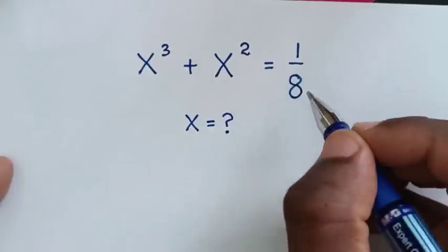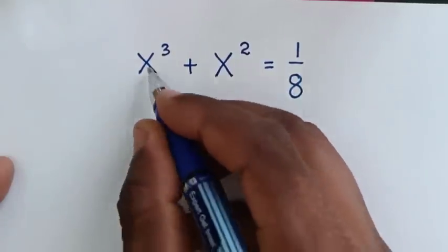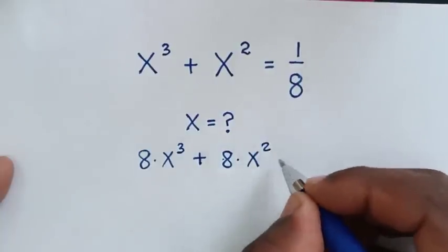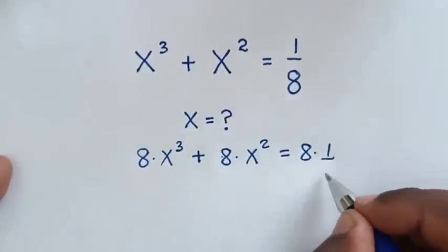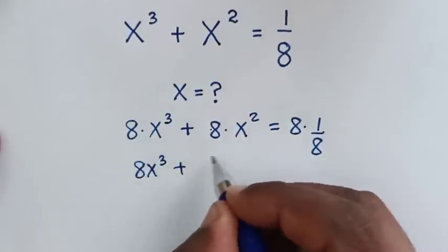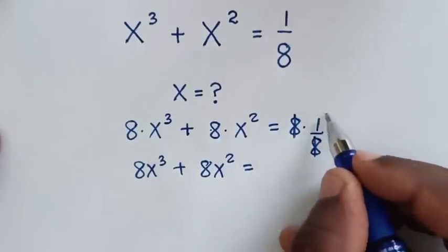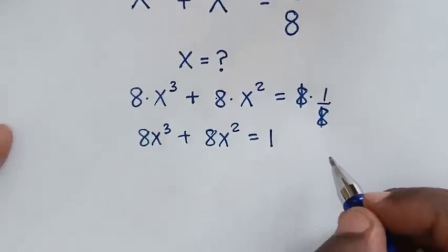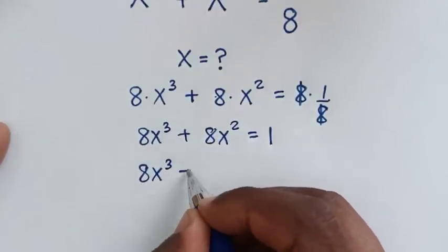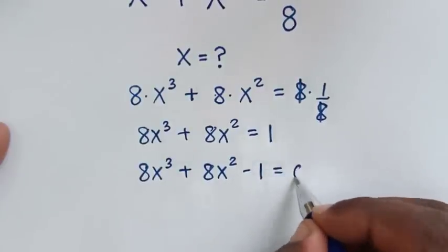When we multiply by 8, it gives 8 times x³ plus 8 times x² equals 8 times 1/8. So this becomes 8x³ plus 8x², and on the right side 8 cancels by 8 to equal 1. Then we take 1 to the left side, giving 8x³ + 8x² - 1 = 0.